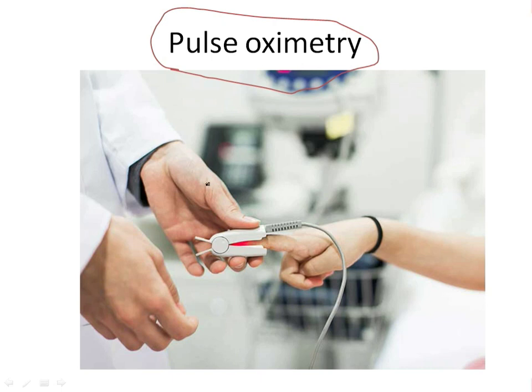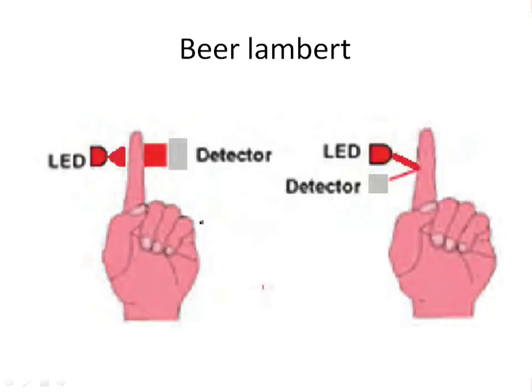This is the pulse oximeter. As you can see here, you can put it on the finger of the patient, on the ear, pin, and on the nose of the patient. Anywhere where you can find blood supply.